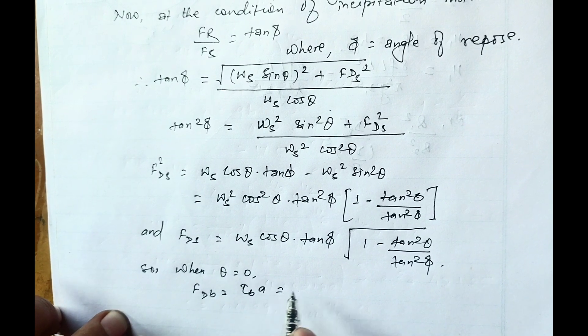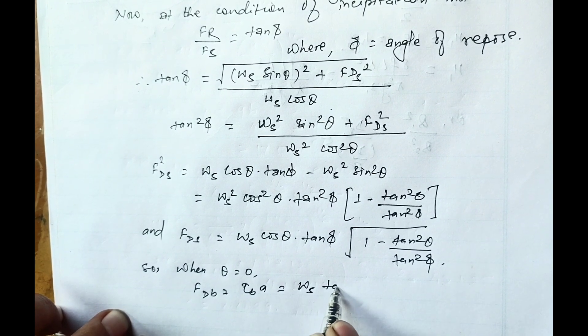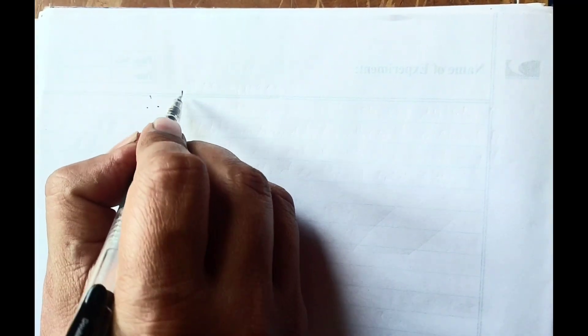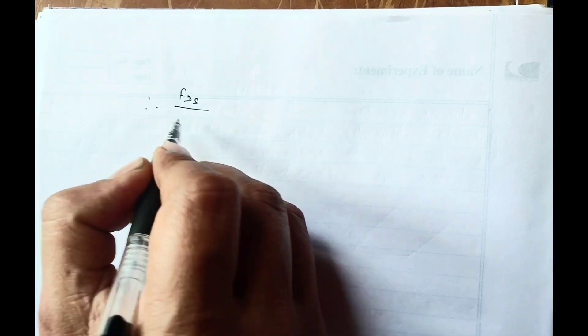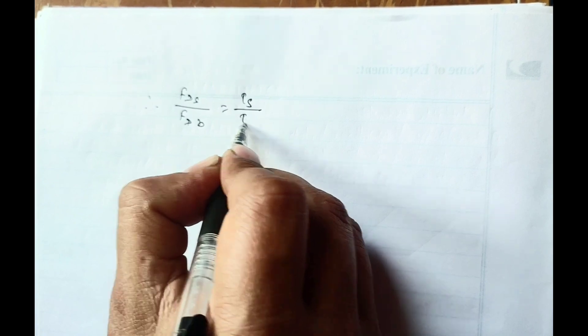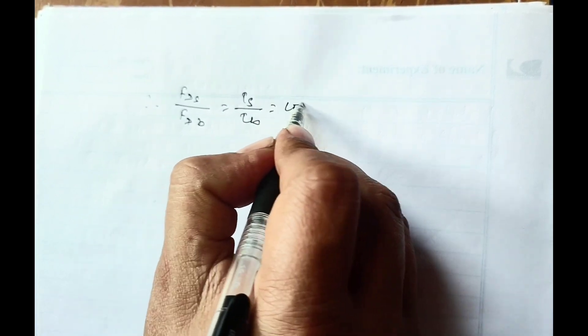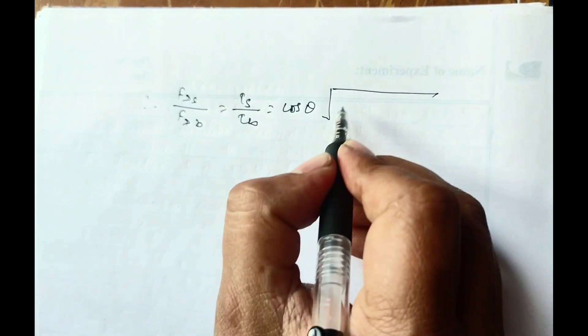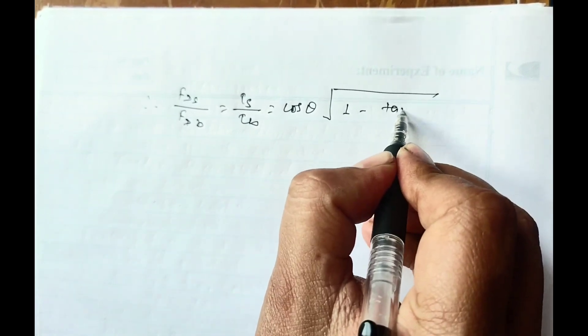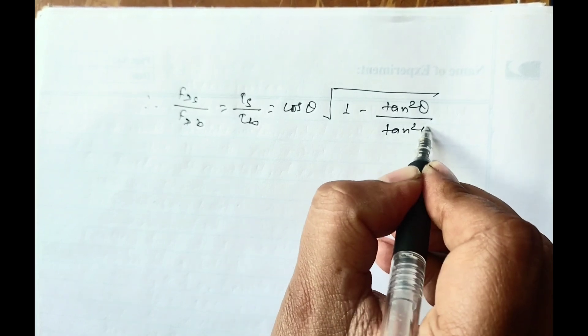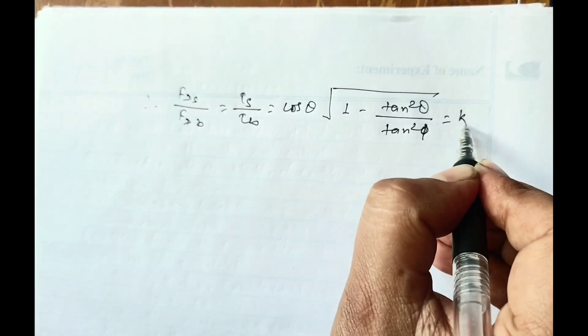Therefore FDS divided by FDB equals tau S by tau B equals cos theta root over one minus tan squared theta by tan squared phi equals K.